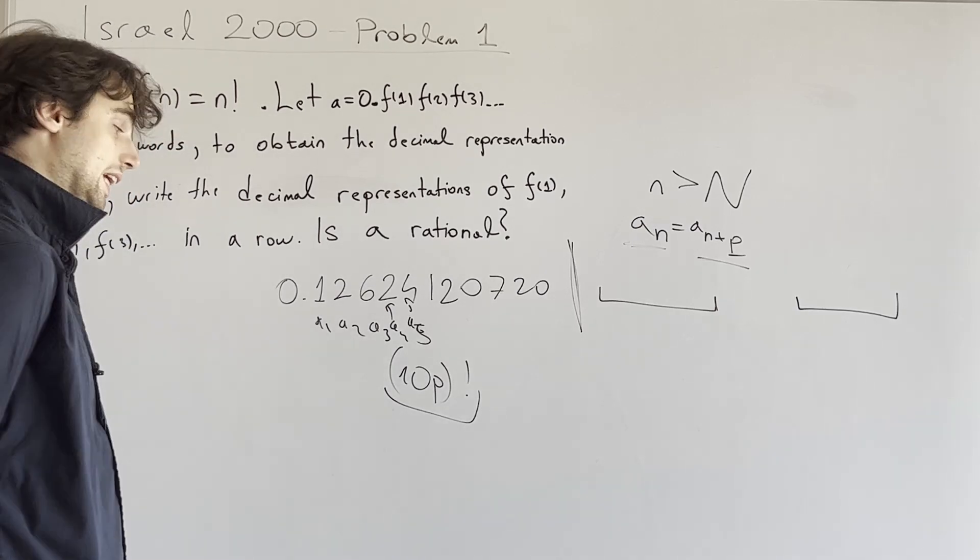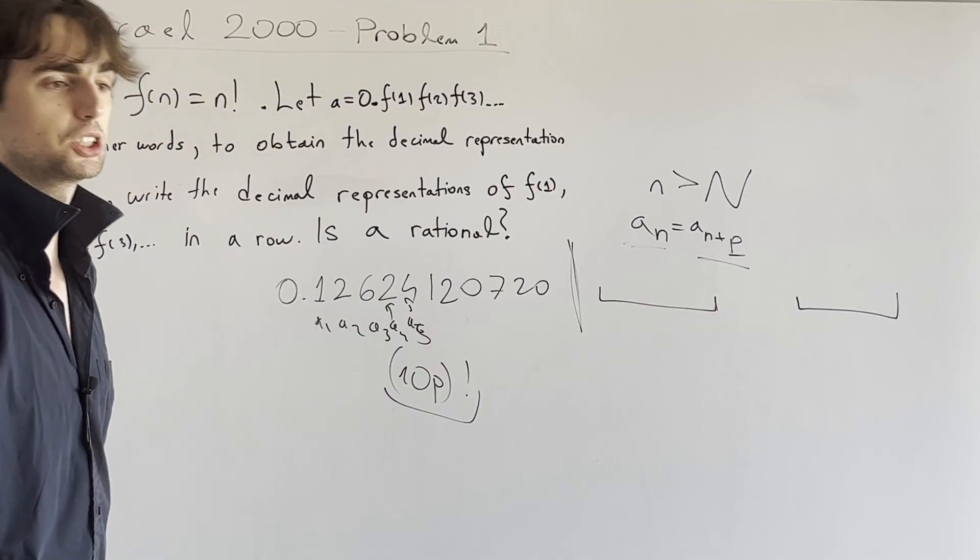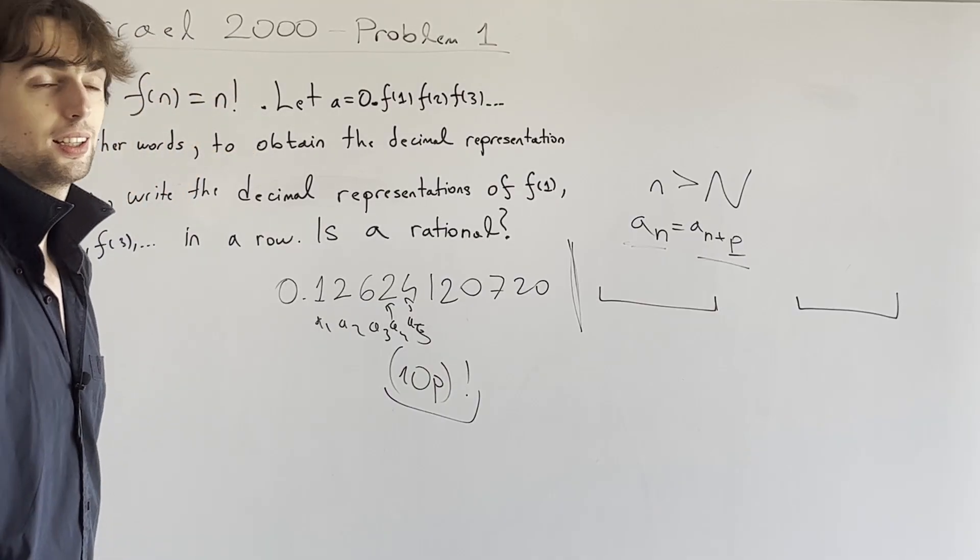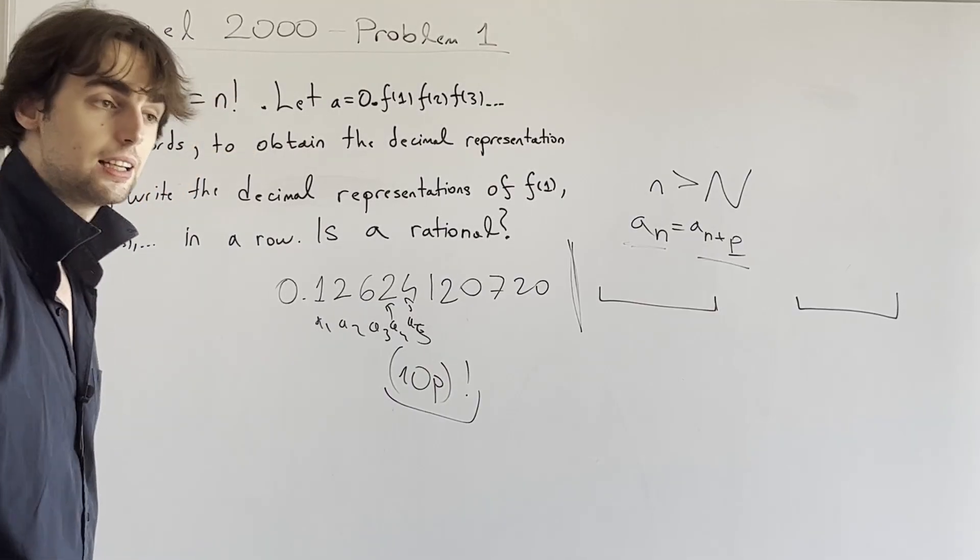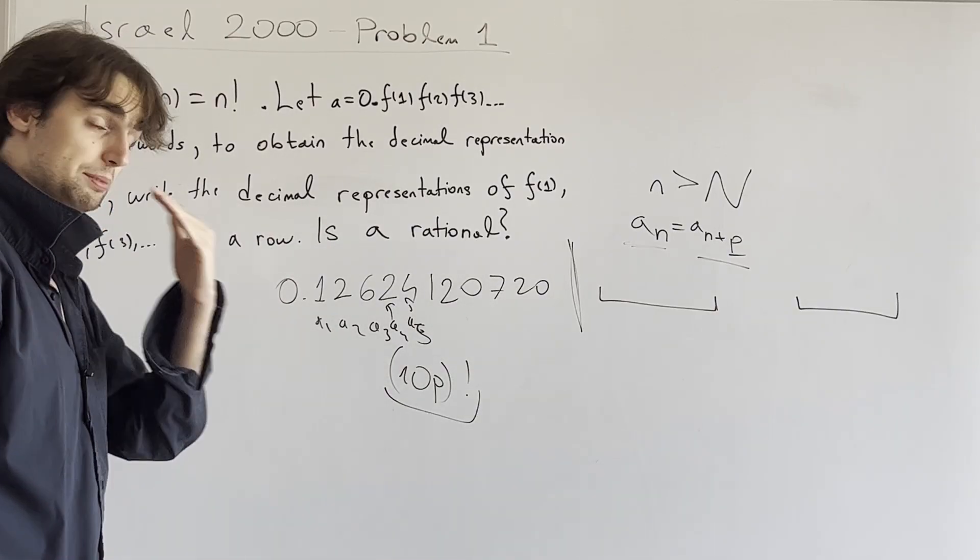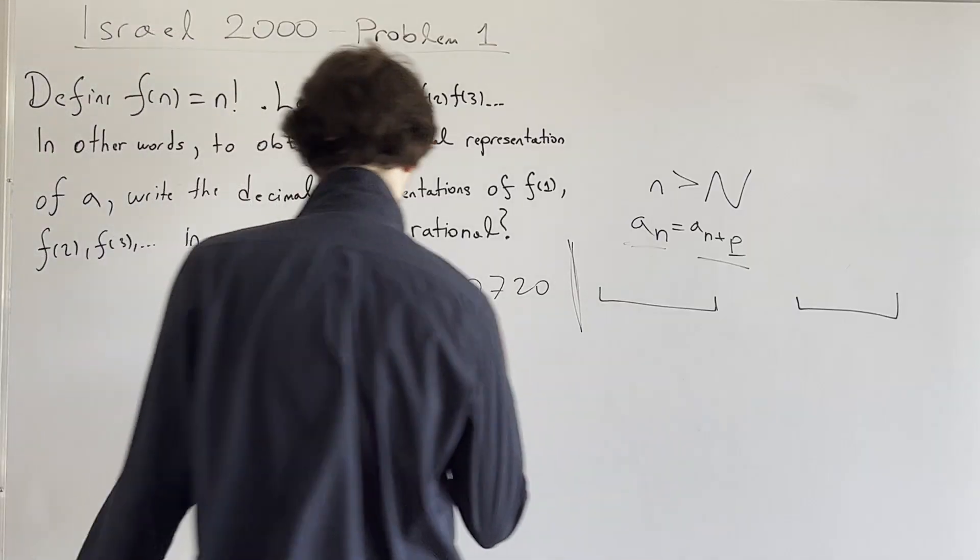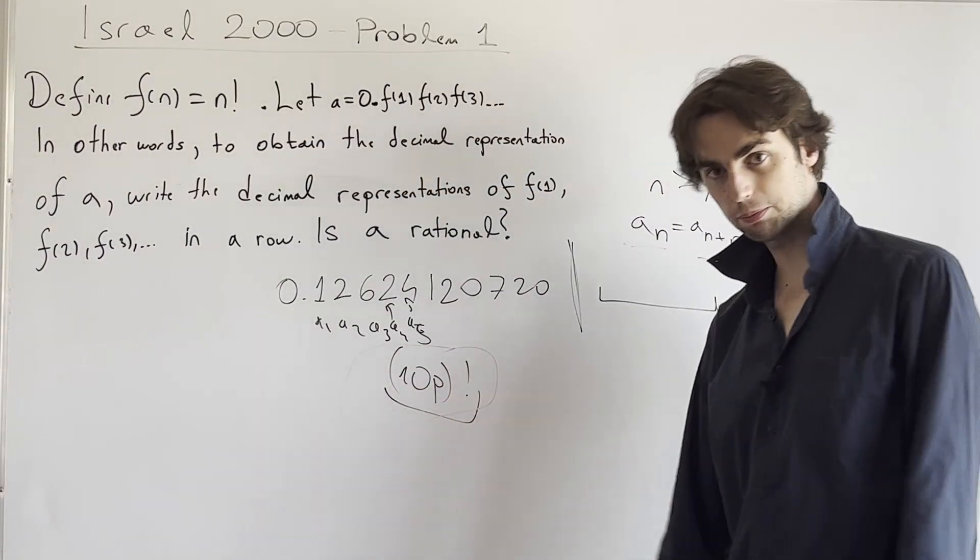Well, it has at least P zeros, like it has 10 times, 20 times, 30 times, all the way till times 10P. So that did a times 10, at least P times, right? I've done it more, but this number has more than P zeros.